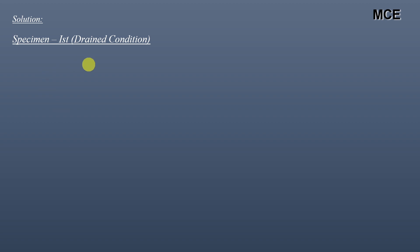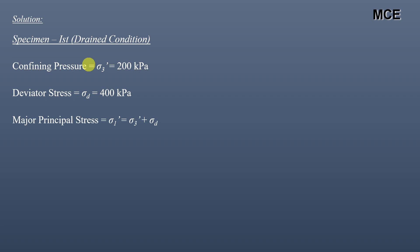For specimen one, we are performing the consolidated drained test. In a consolidated drained test we get the effective stress parameters. The effective confining pressure is 200 kilopascal and the deviator stress is 400 kilopascal. The major principal stress equals 200 plus 400, which is 600 kilopascal. So the major and minor principal stresses for specimen one are 600 kilopascal and 200 kilopascal respectively.